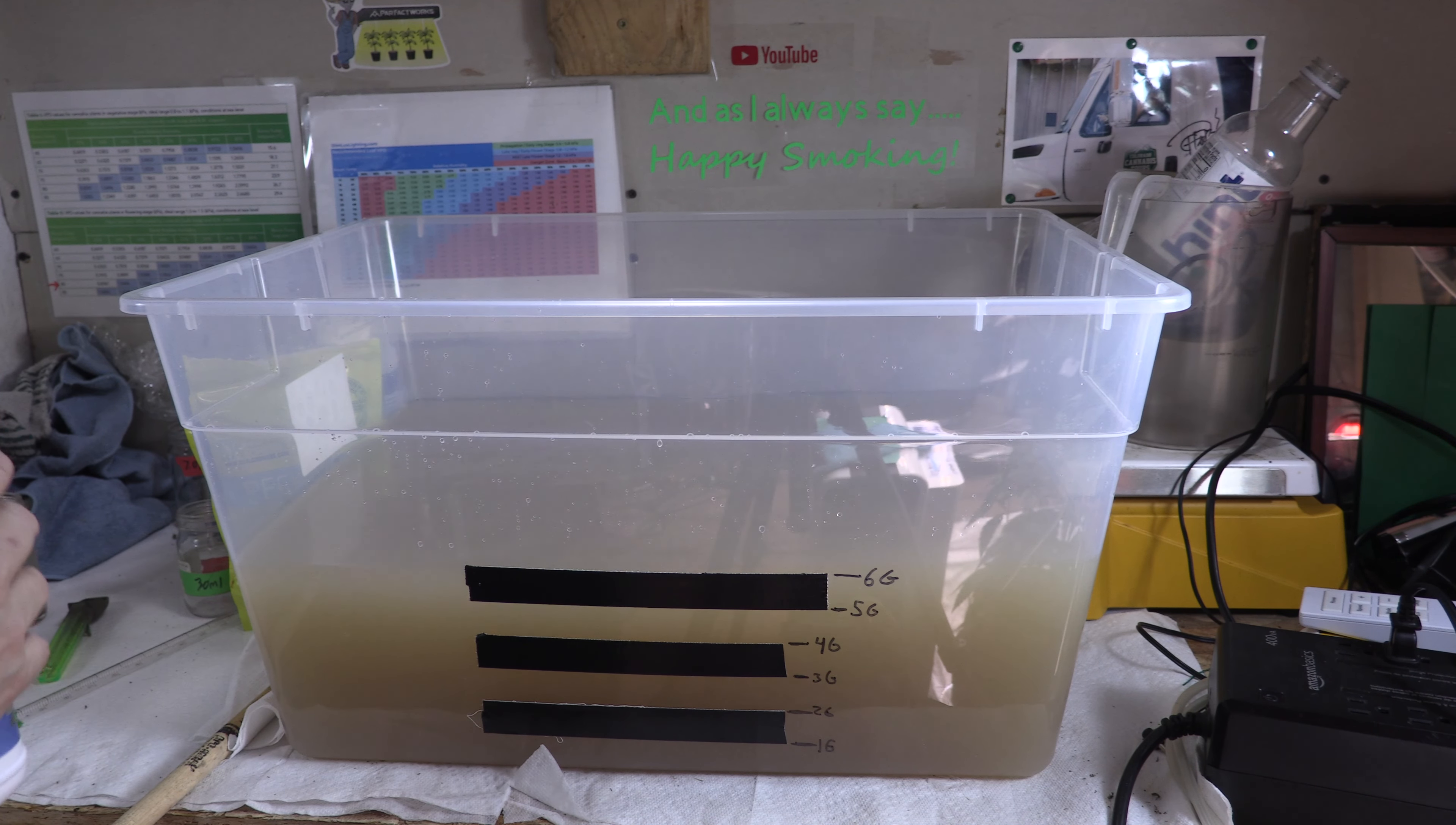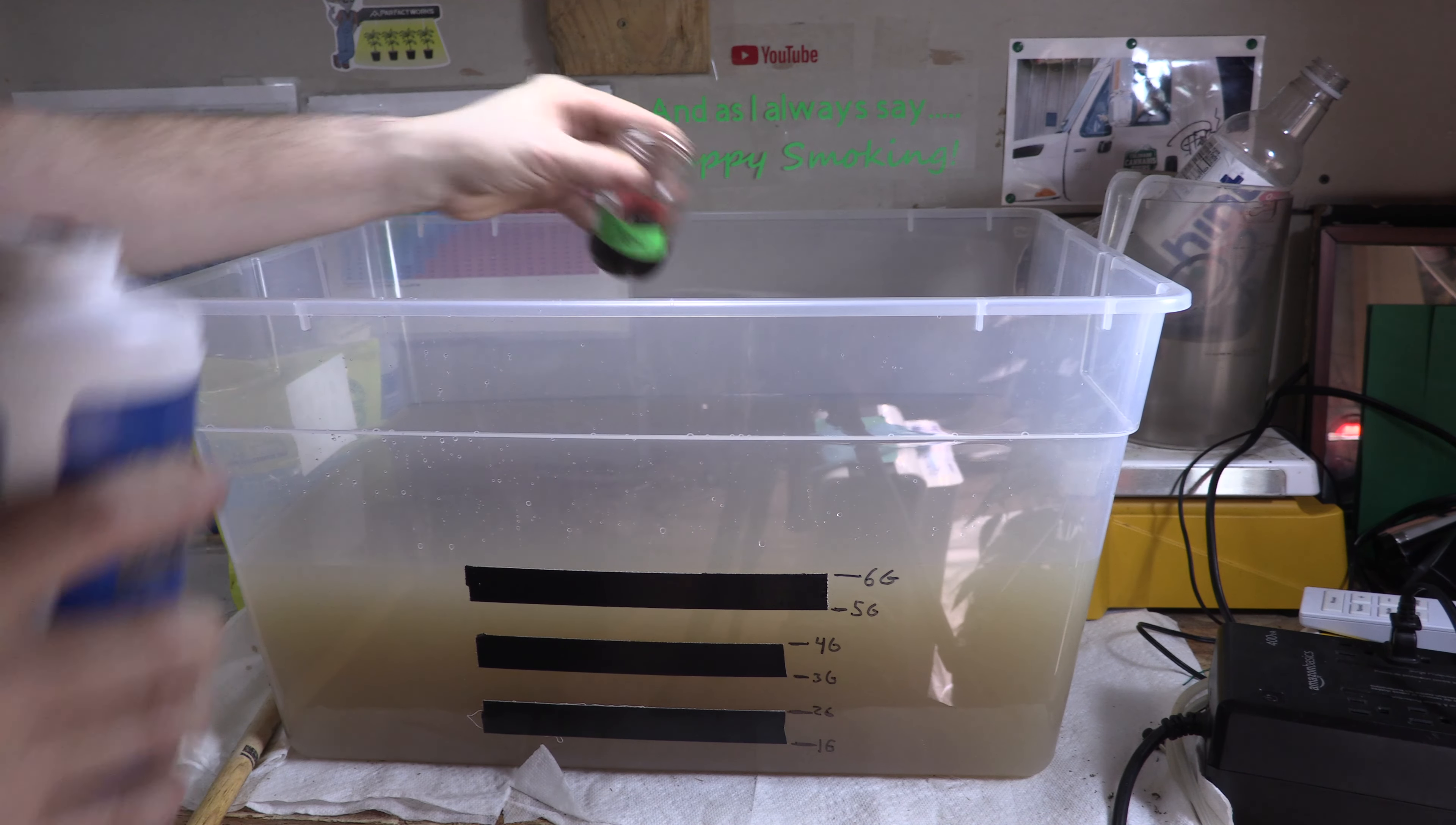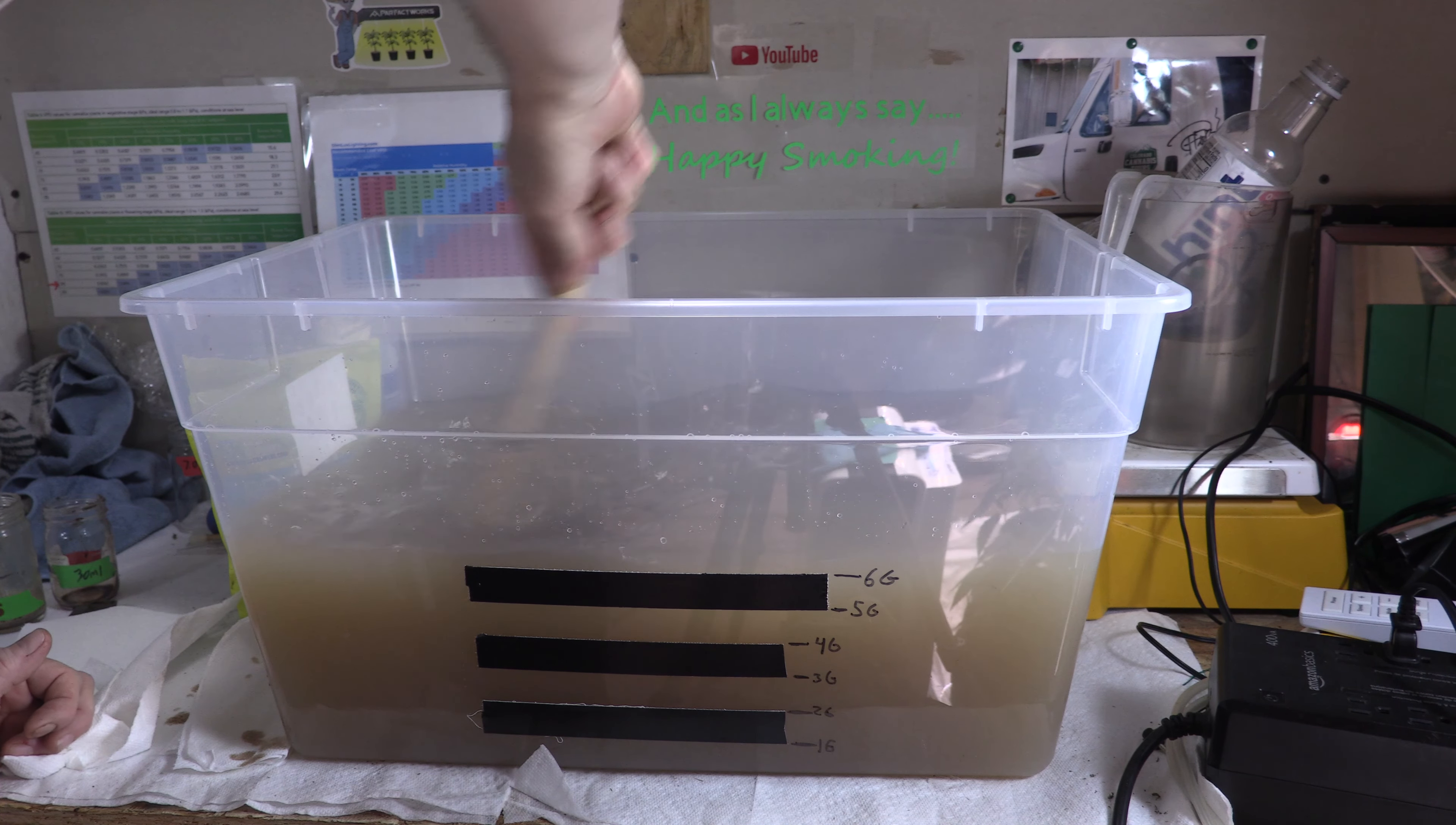Alright, CalMag is next. Shake it up real good. There it is, 30 milliliters of CalMag. See if I can get this to pour proper. There we go, CalMag in. We're just now down to basically the Real Growers Recharge. Clean this off. Do a nice big stir, put that CalMag in there real good.